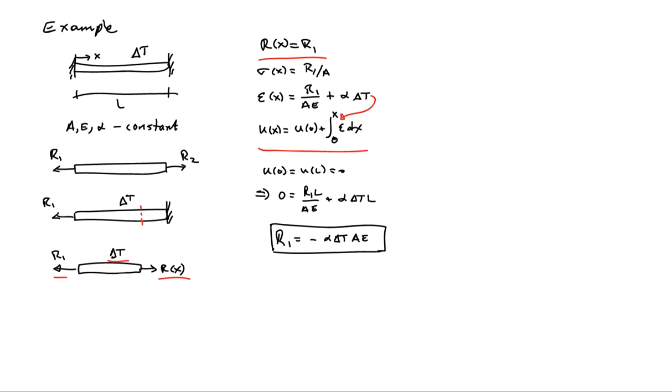Well, I can solve that equation there for R1. And that tells me that R1 is equal to minus alpha delta T AE. So if you heat the bar and alpha is positive, R1 is going to be a negative number, so that's going to put the bar entirely into compression all the way along its length.